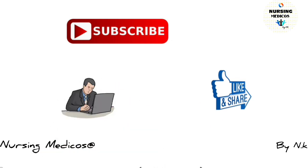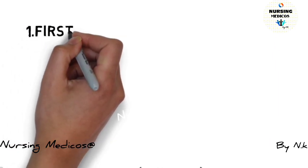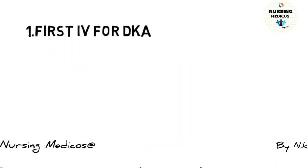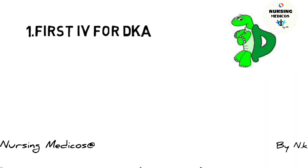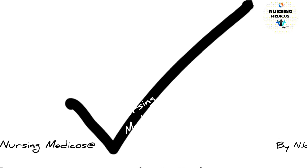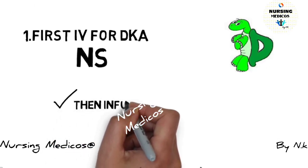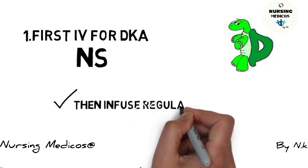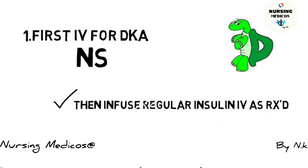First one: in case of diabetic ketoacidosis, we should start with saline, then we have to infuse regular insulin as a treatment.